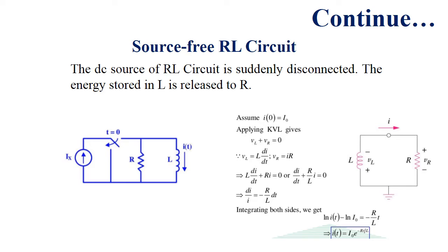If we consider the RL circuit and apply KVL across it, VL is the voltage across the inductor and Vr is the voltage across the resistor, so VL plus Vr equals zero. We know that VL equals L·di/dt and Vr equals i·R. Substituting these values gives L·di/dt plus R·i equals zero, or equivalently di/dt plus (R/L)·i equals zero.